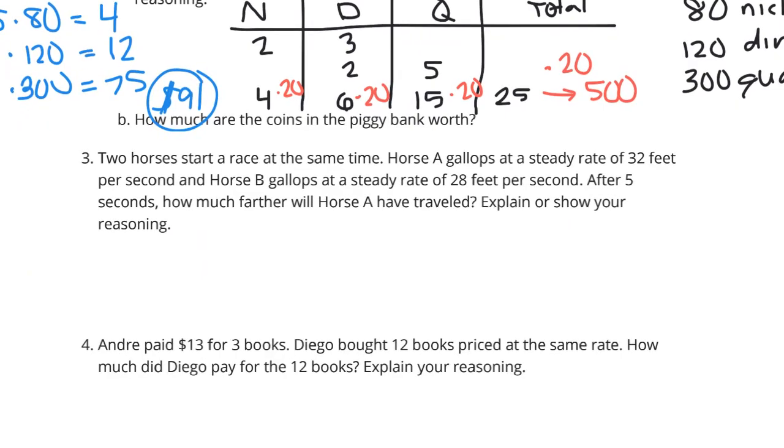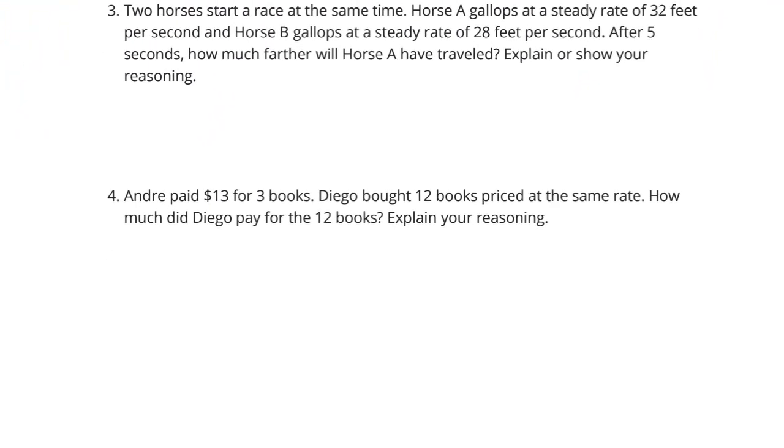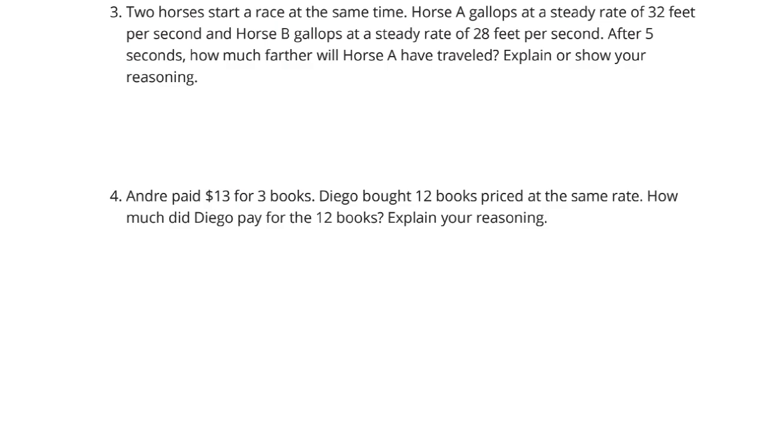Question 3. Two horses start a race at the same time. Horse A gallops at a steady rate of 32 feet per second, and horse B gallops at a steady rate of 28 feet per second. After 5 seconds, how much farther will horse A have traveled? Explain or show your reasoning.